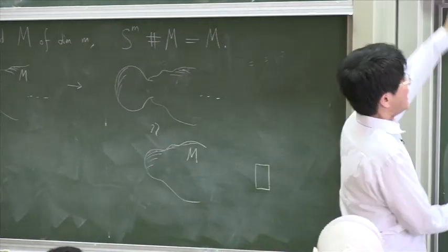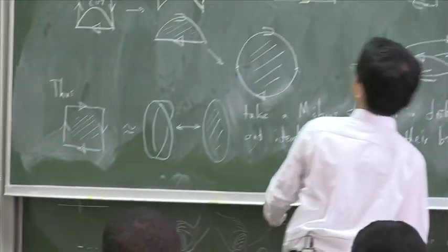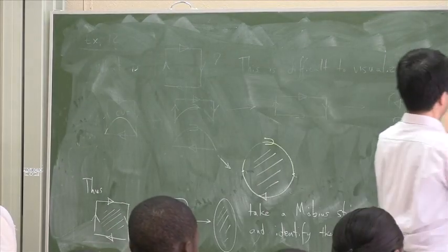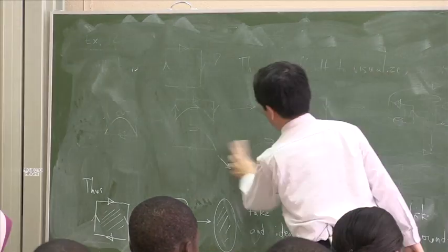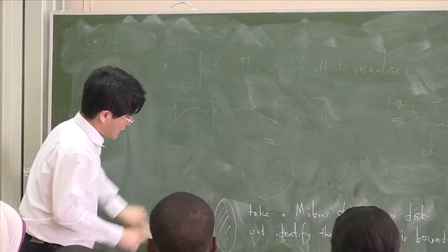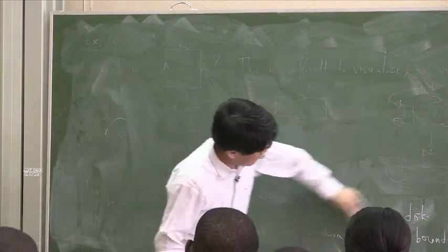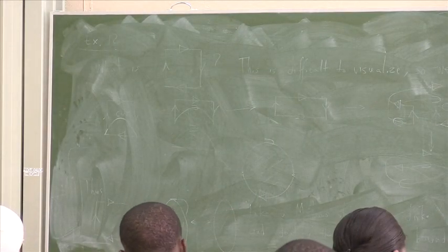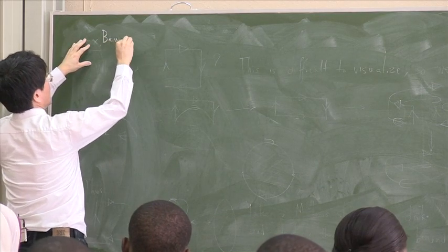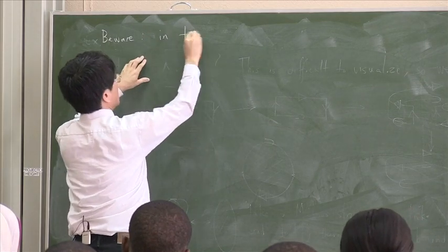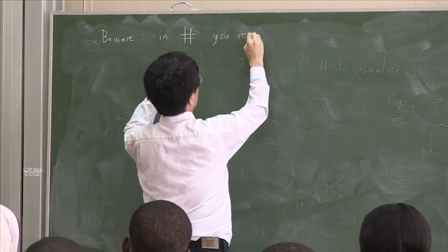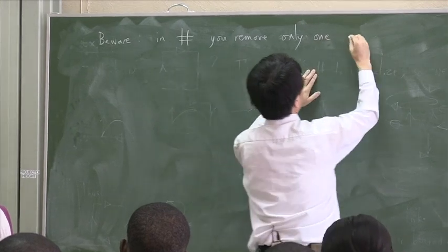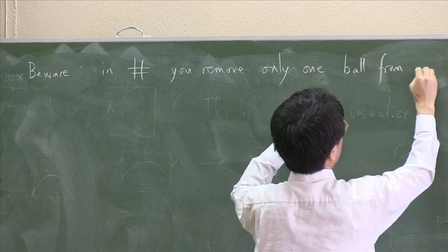OK. Please, however, be careful. Not everything is so trivial. A common mistake made by almost all beginners is in what you are removing in order to do the connected sum. You must remove a single ball from each side. Please be careful that in connected sum, you remove only one ball from each side.